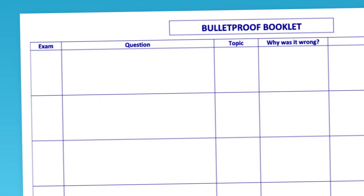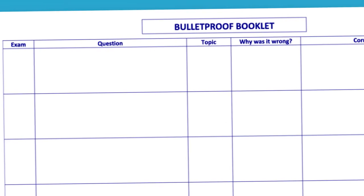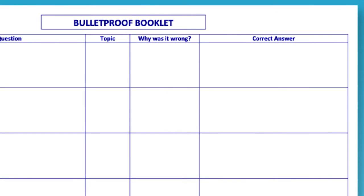To fill it in, just write in the name of the exam in the first column. In the second, rewrite the question where you lost marks. And then in the third column, write in the topic of the course that it relates to. Column four is the most important, and it asks you to identify why you got it wrong.